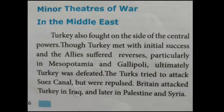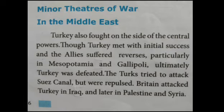Minor theaters of the war: Turkey fought on the side of the Central Powers. In the beginning, Turkey got victory and the Allied countries suffered in Mesopotamia — a historic region of West Asia — and at the Gallipoli Peninsula in Turkey. Yet Turkey was finally defeated. The Turks tried to attack the Suez Canal but were chased back. Britain attacked Turkey in Iraq, Palestine, and Syria.